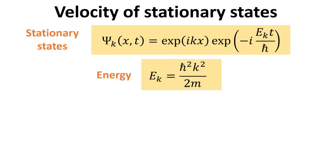With the eigen solutions for the time-independent Schrödinger equation, one can construct the stationary states for the time-dependent Schrödinger equation as shown. These stationary states psi_k are basically plane waves, and there are infinitely many such stationary states indexed by k.